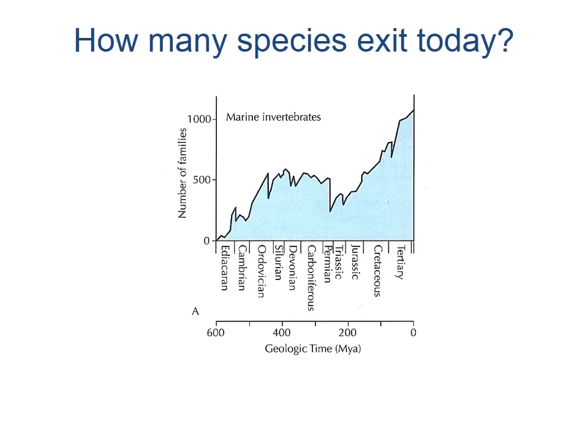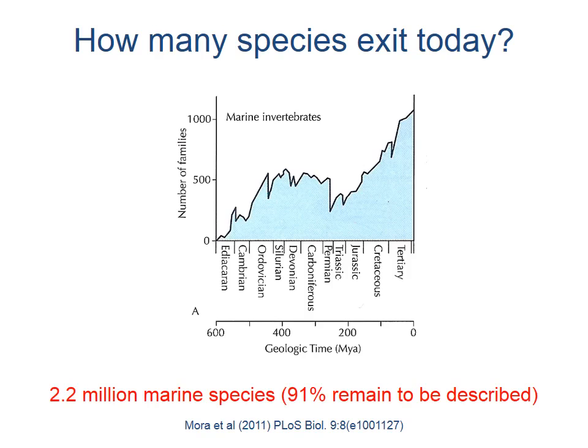Life on Earth has undergone a series of speciations and extinctions. Overall, we do see an increase in the number of species in modern times. Recent estimates indicate that there are about 2.2 million marine species, with 91% remaining to be described. This indicates that there is a lot of biological complexity out there that remains to be explored.